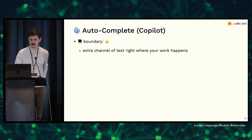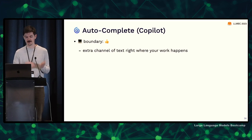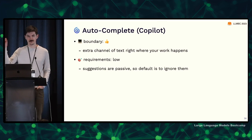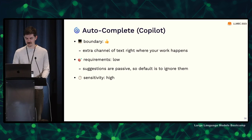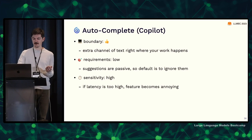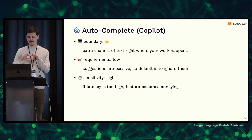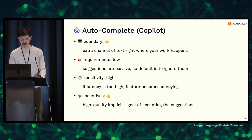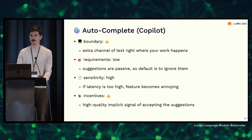The interface boundary is great — it's just an extra channel of text right where your work happens. It didn't take over anything that already existed, doesn't force you to go to another window. The accuracy requirements are low because suggestions are passive — you're not asking for them, so by default you can just ignore all of them. The latency sensitivity is high, though — if you've already moved on in your mind and something shows up, that's annoying. You want it to show up as you're thinking. The feedback incentives are high because accepting a suggestion is high-quality signal that it was a good one.